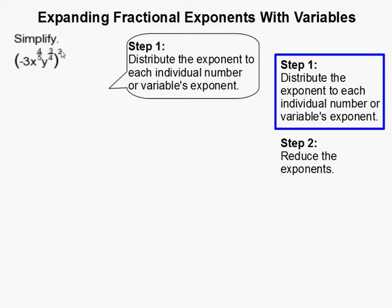So that means distribute this outside one here to this guy, to this guy, and to this guy over here. So as you can see, I did 2 times this 3 fourths, 2 times this 4 fifths, and 2 times this.